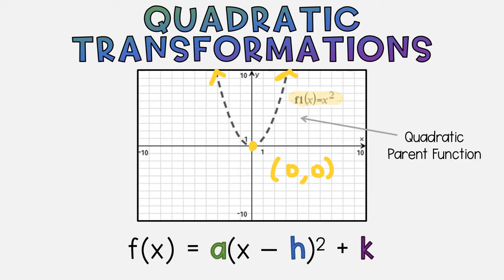When you do a transformation, a transformation is a type of change. What's going to happen is that you're going to have a number either in the spot where a is at, the spot where h is at, or the spot where k is at. So we're going to take a look at what happens when you put numbers in these spots.